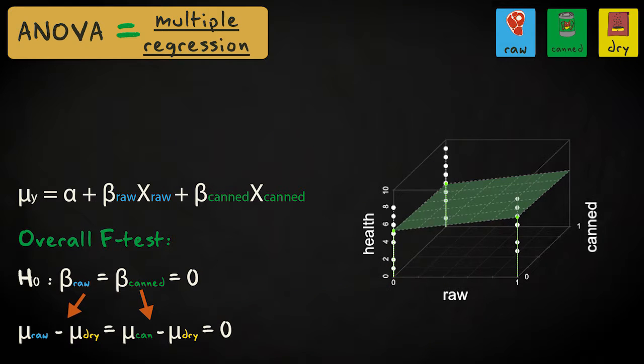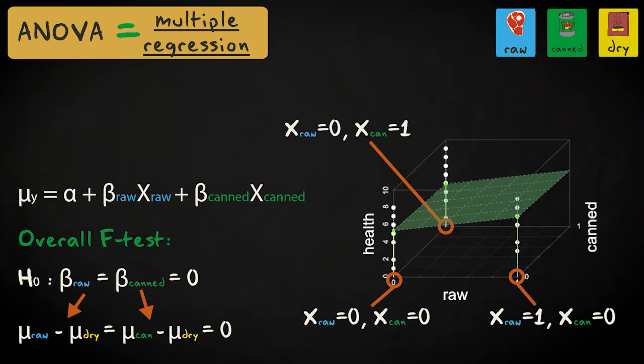Since we have only two indicators, we can represent the data visually in a three-dimensional graph. As you can see, the three groups are located at the corresponding values zero and one of the dummy variables. The plane goes through the means of these groups.